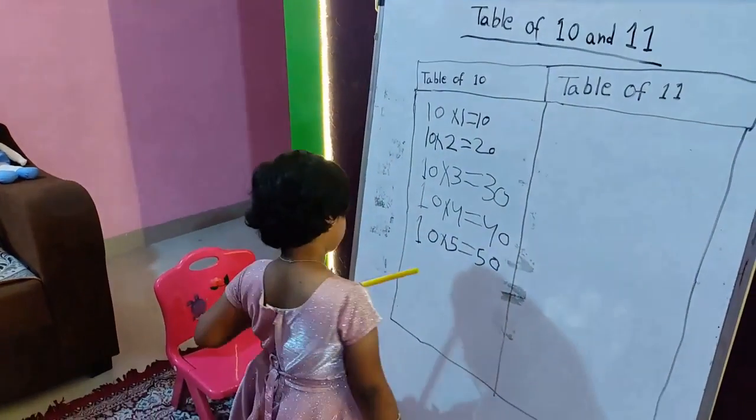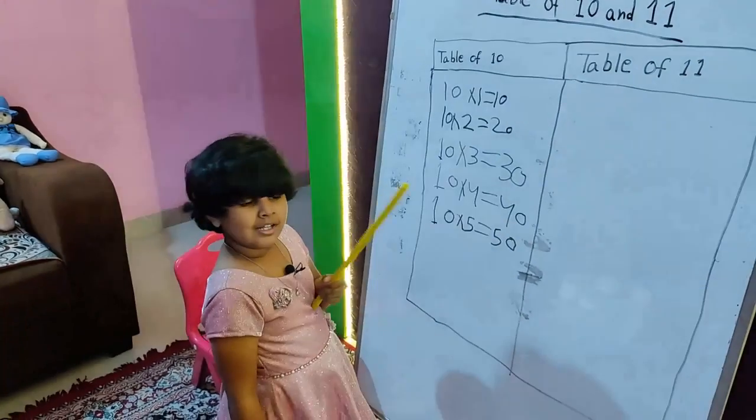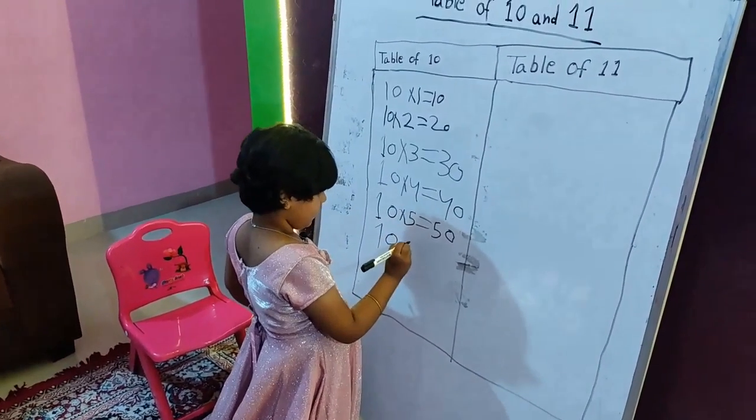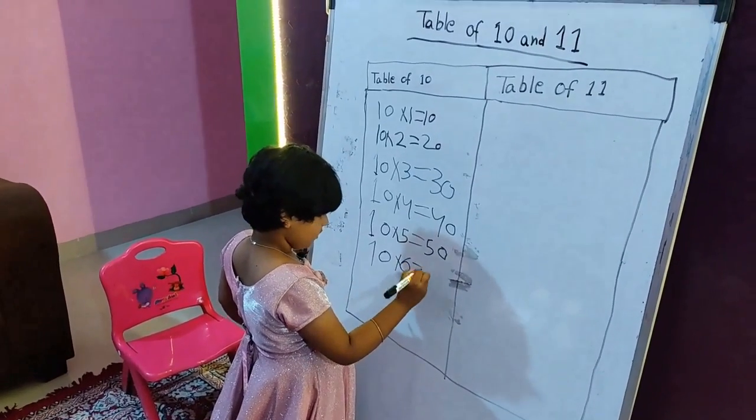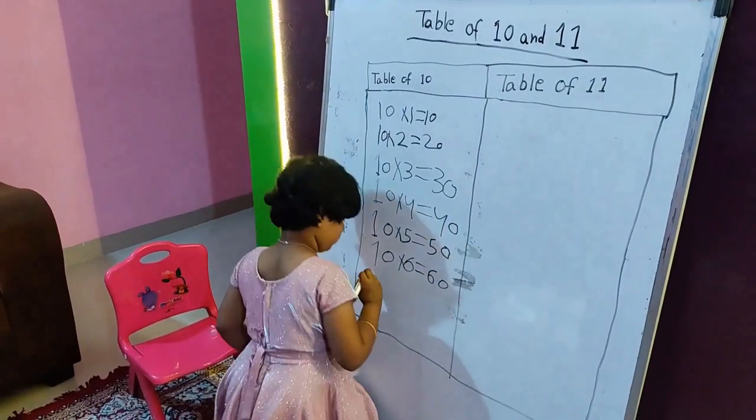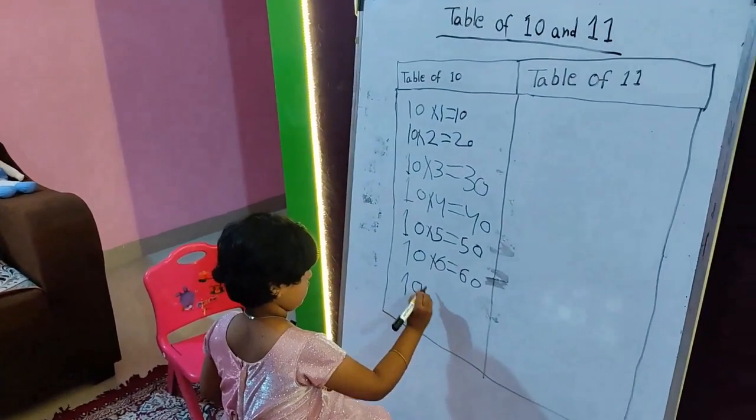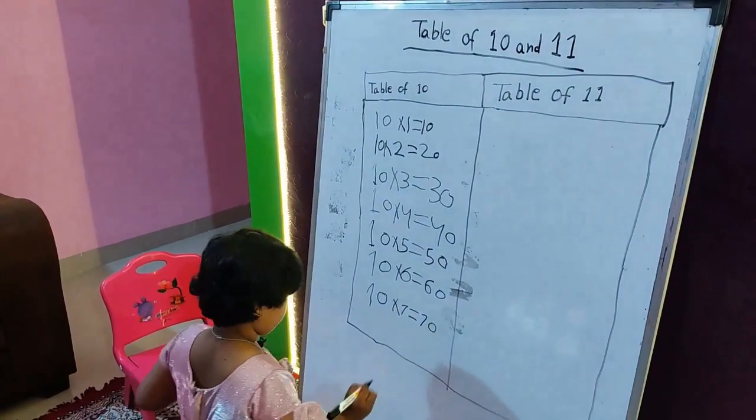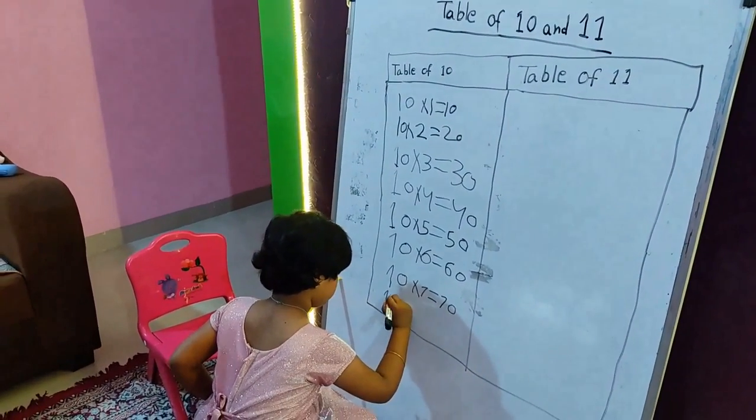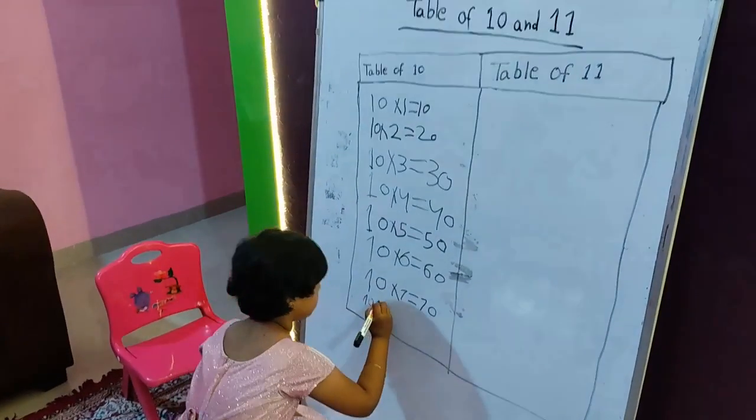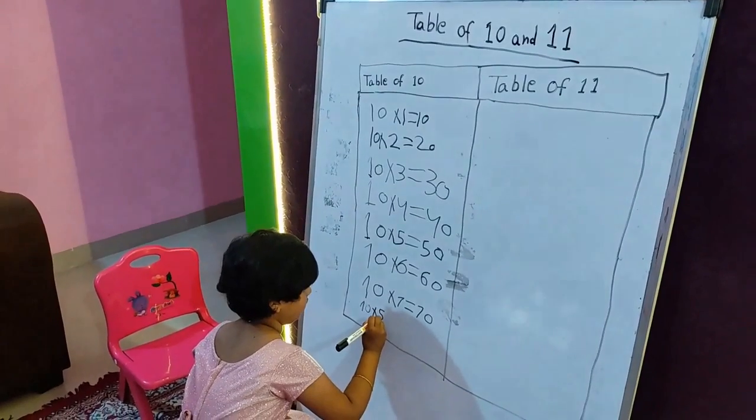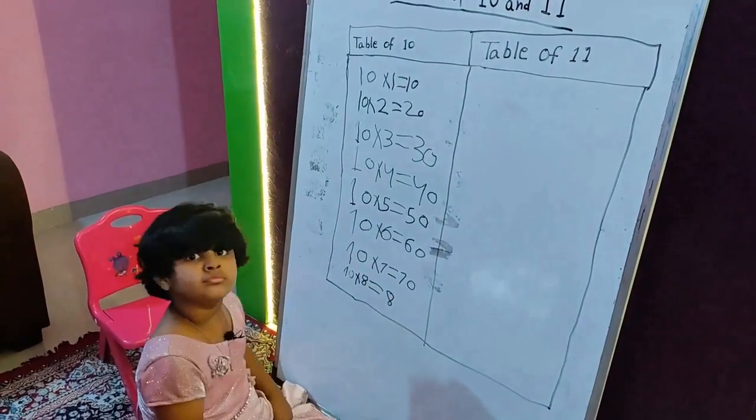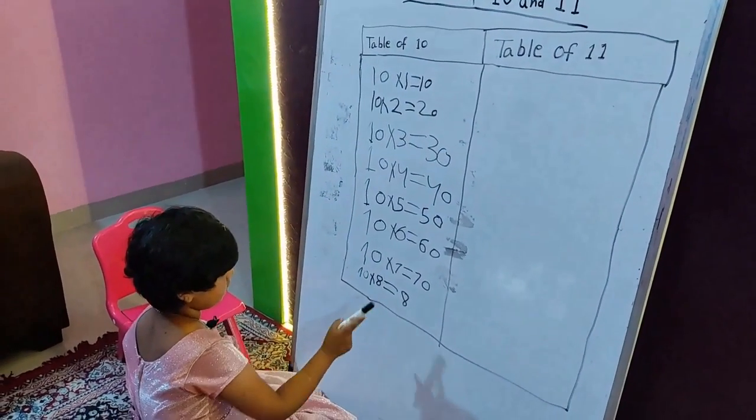You know I will watch light just like my birthday. Okay, next. Ten multiply six equals sixty. Ten multiply seven equals seventy. Ten multiply eight equals eighty. Ten multiply eight equals eighty.